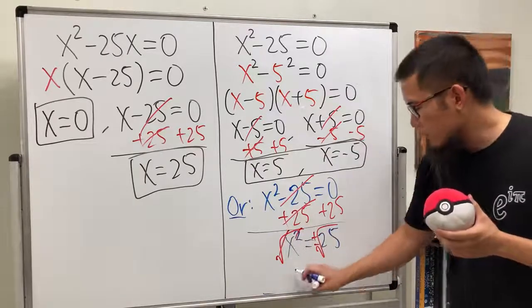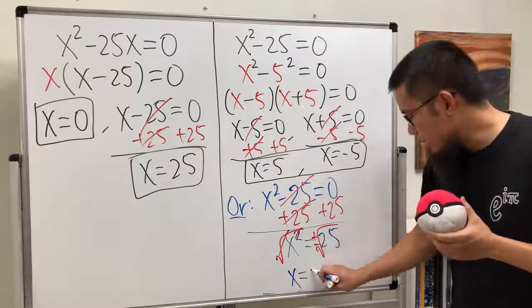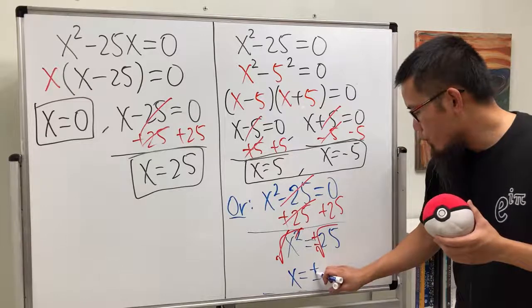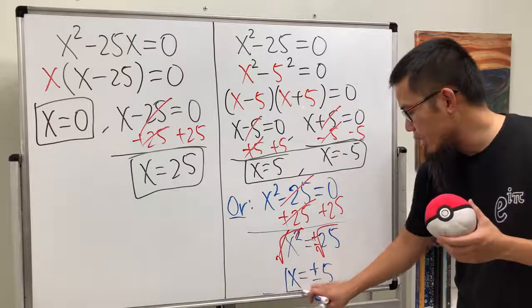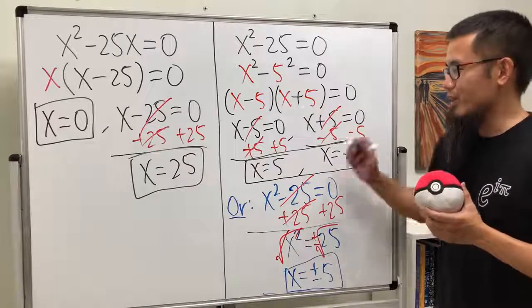Square, square root cancel. So finally, we see x is indeed equal to plus or minus square root of 25, which is just a 5. And there we have it. Same answer as this method. So you can let me know which one that you prefer.